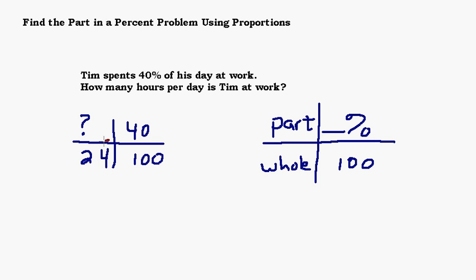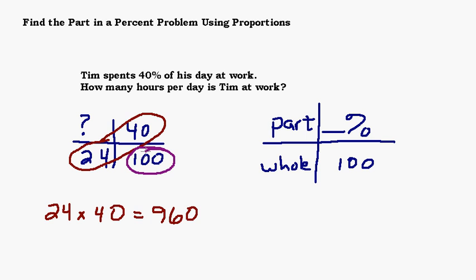So same technique. You're going to multiply the numbers that are across from each other, 24 times 40. 24 times 4 would be 96. And then, so 40 would be 96 with a 0, 960. And then we are going to divide by the number that's across from the question mark. Again, you're going to move the decimal two places to the left when you're dividing by 100. And that will give us 9.6.